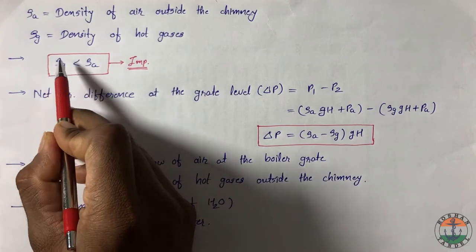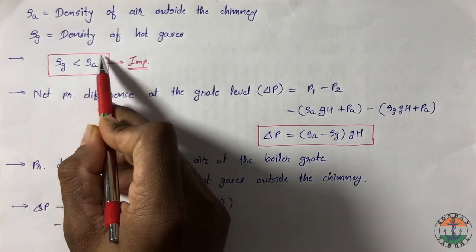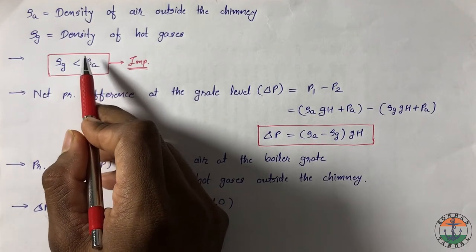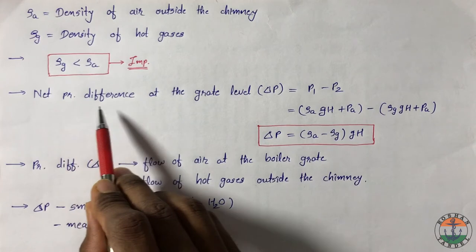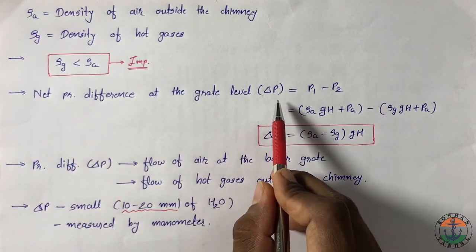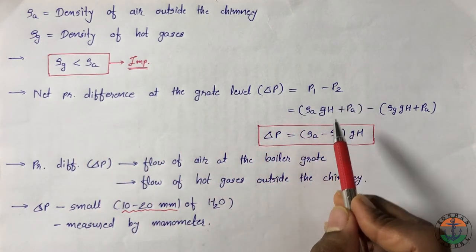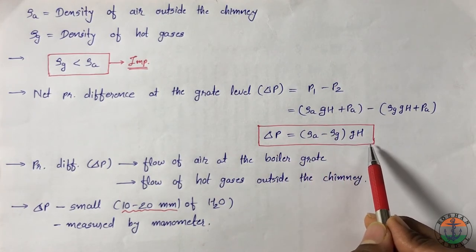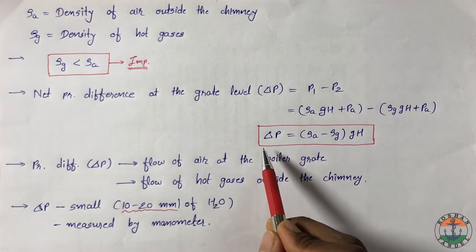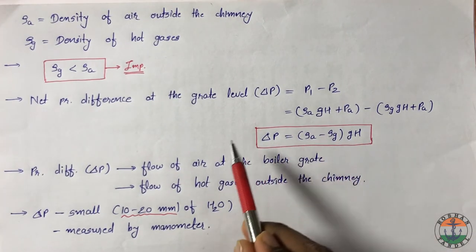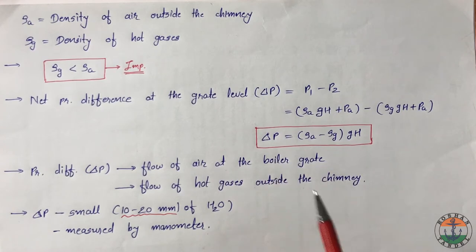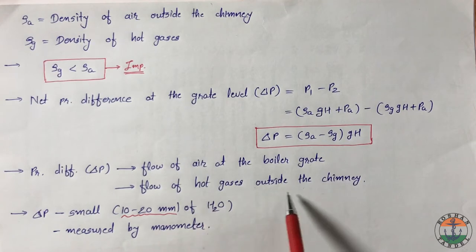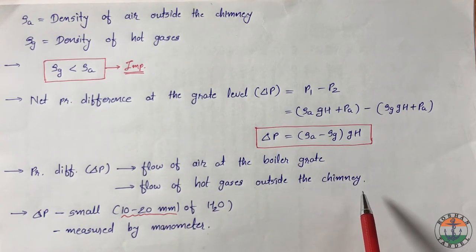Density of hot gases is less than the density of cold air outside the chimney. So net pressure difference at the grate level, delta P, is equal to P1 minus P2, giving us (rho_A minus rho_G) into G·H. This pressure difference causes the flow of cold air at the boiler grate and flow of hot gases out of the chimney, which is called draft.